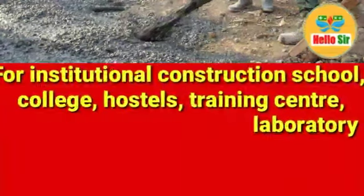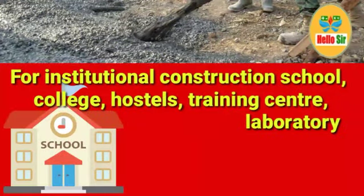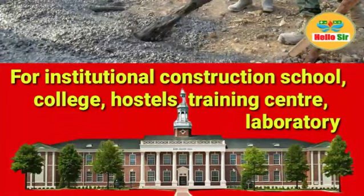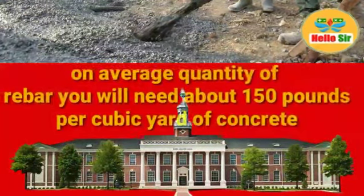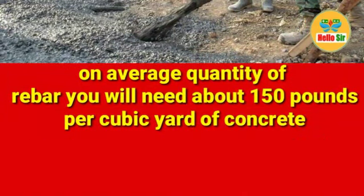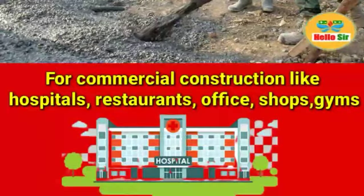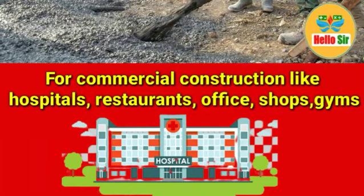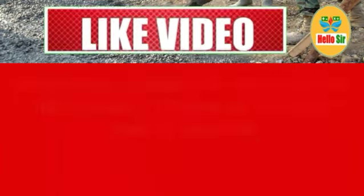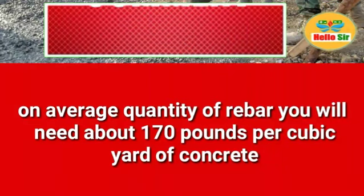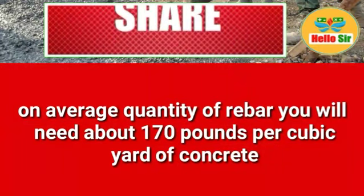For institutional construction — such as schools, colleges, hostels, training centers, and laboratories — on average the quantity of rebar you will need is about 150 pounds per cubic yard of concrete. For commercial construction — such as hospitals, restaurants, offices, shops, and gyms — on average the quantity of rebar you will need is about 120 pounds per cubic yard of concrete.